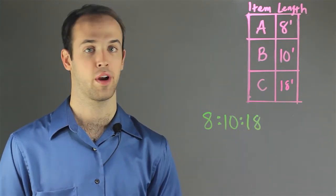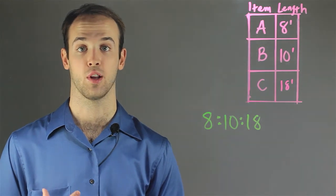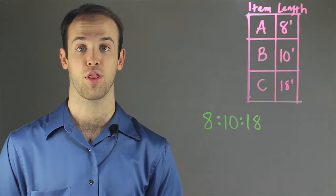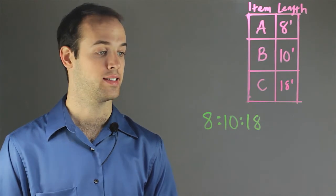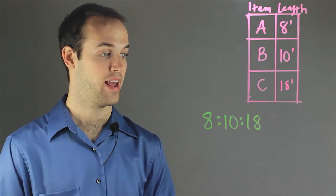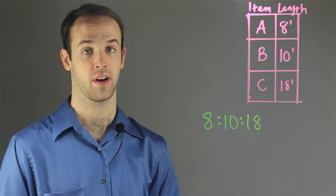And then to get this ratio into lowest terms, I'm simply going to look for a common factor in all three of the numbers that I can divide out. And I can see that 8, 10, and 18 all have a 2 in common.